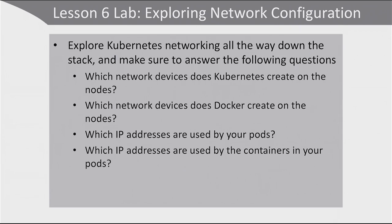We are now at the end of lesson 6. In this lesson we have talked a lot about networking. We haven't really configured anything, but let's do a lab anyway to explore how networking is organized. In this lab you are going to explore Kubernetes networking all the way down the stack. Answer these questions as a guideline: Which network devices does Kubernetes create on the nodes? Which network devices does Docker create on the nodes? Which IP addresses are used by your pods? And which IP addresses are used by the containers in your pods?